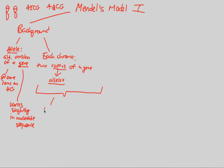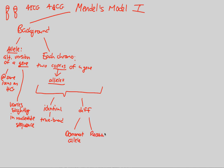Those two alleles can either be identical to each other — this does happen and we see it a lot — or they can be different. If they're identical, we are looking at a true breed: the same exact allele on both homologous chromosomes. But the most interesting relationship to Mendel's experiments is when we see different alleles. If we have allele one and allele two and they are slightly different from each other, we then always see a dominant allele and a recessive allele.